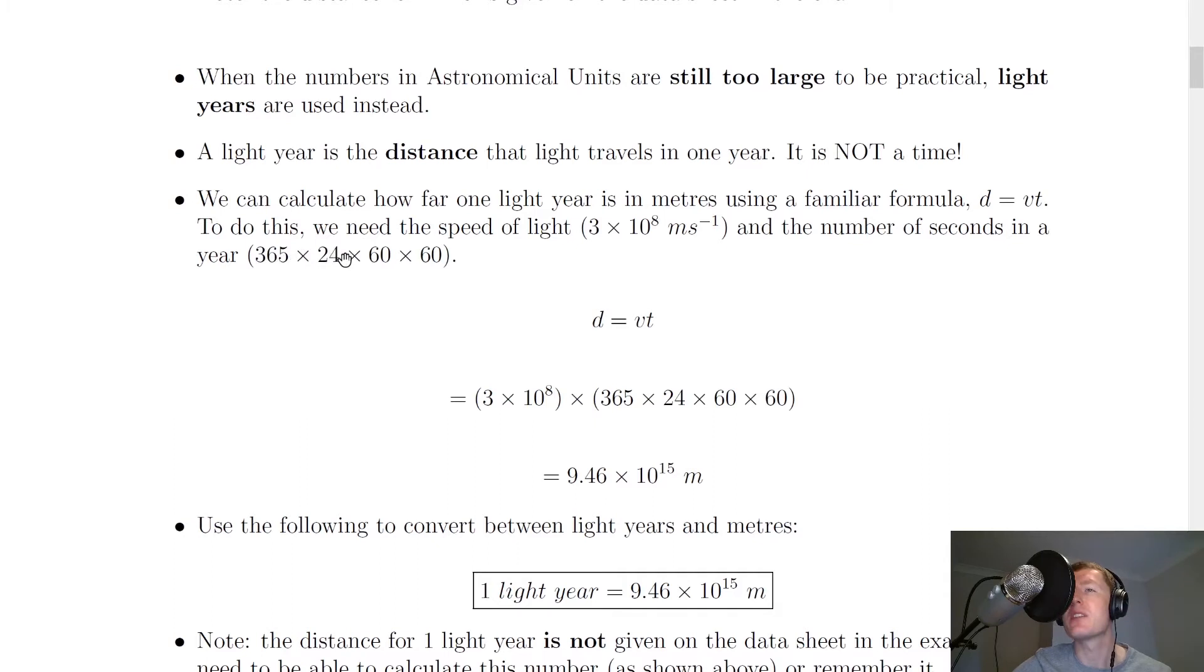multiplying it by how many hours are in a day, multiplying that by how many minutes are in an hour, and multiplying that by how many seconds are in a minute. So we get 365 times 24 times 60 times 60. Then using d equals vt, we plug those numbers in: 3 times 10 to the 8 times 365 times 24 times 60 times 60. You should get a value of about 9.46 times 10 to the 15 meters.